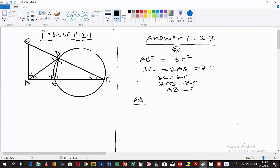AD over AC is equal to AB over AD. The triangles are similar.